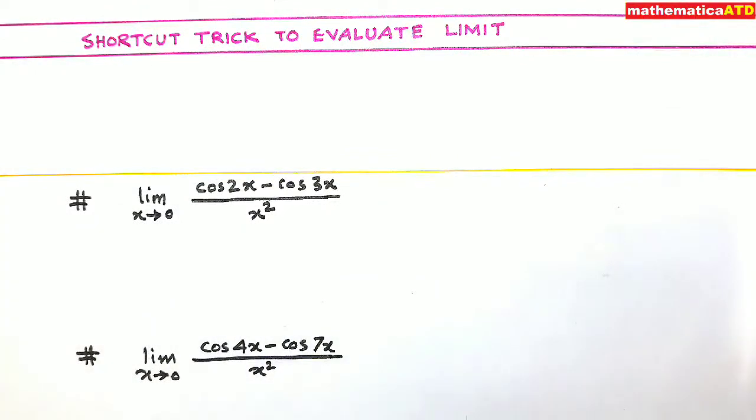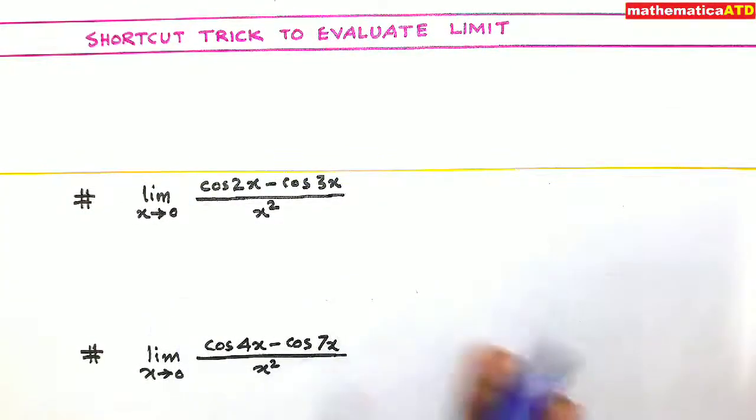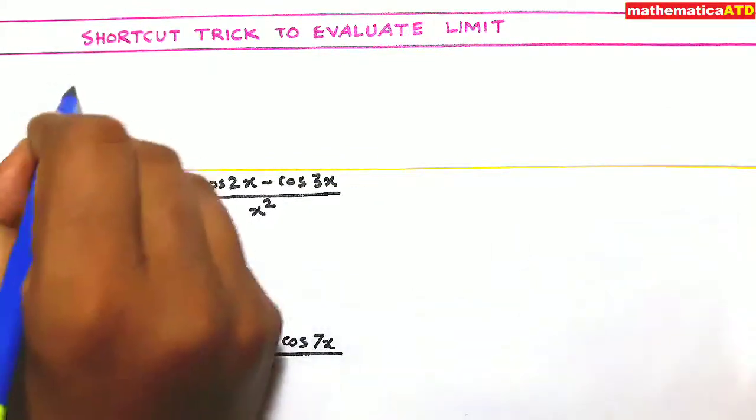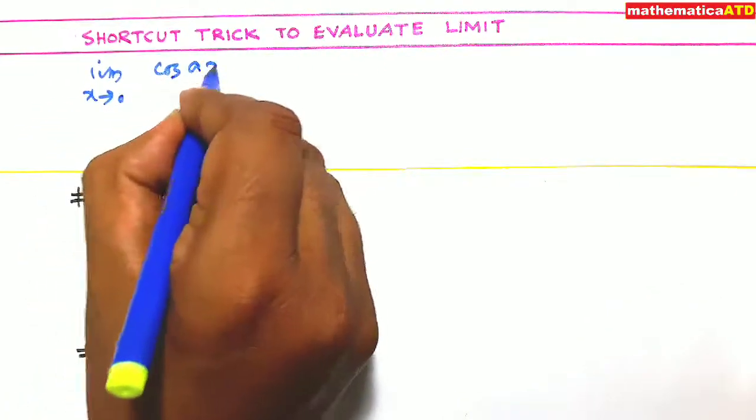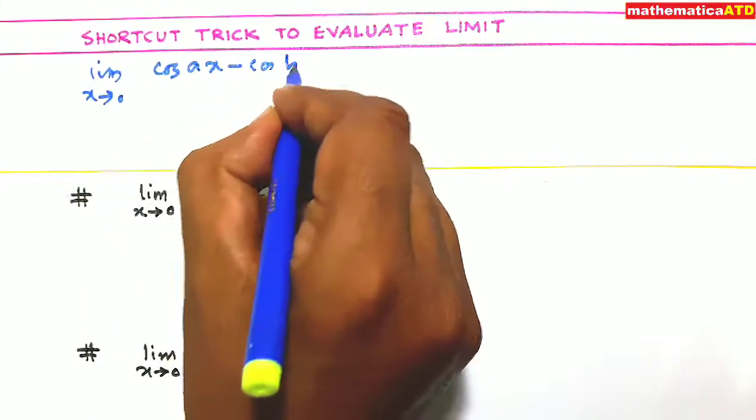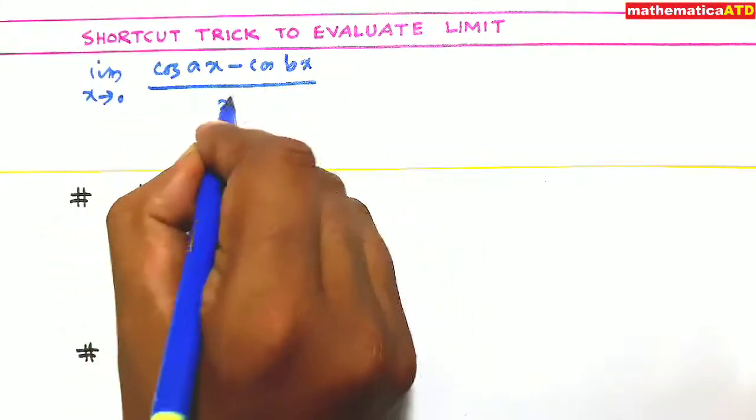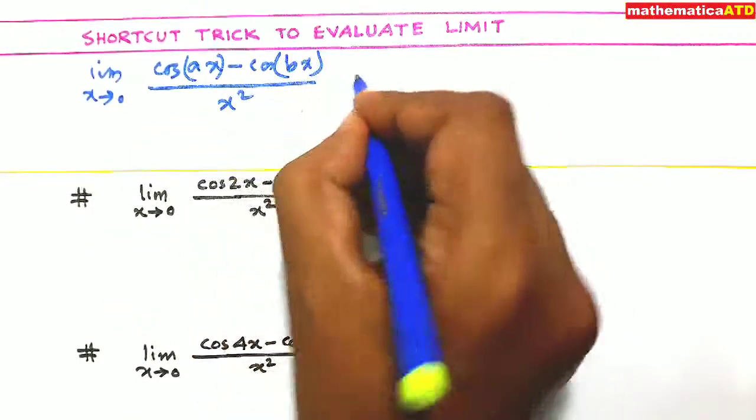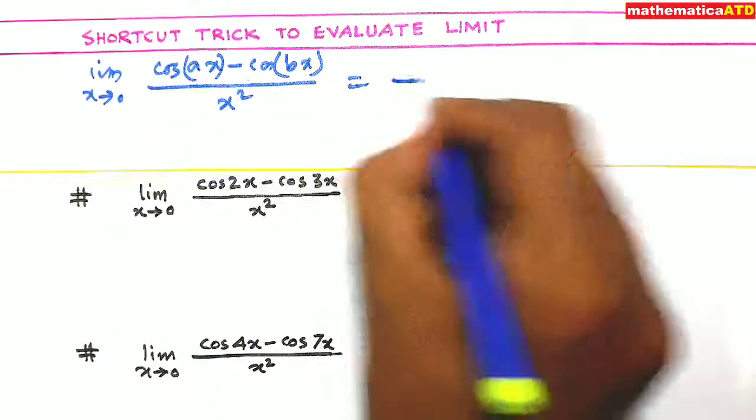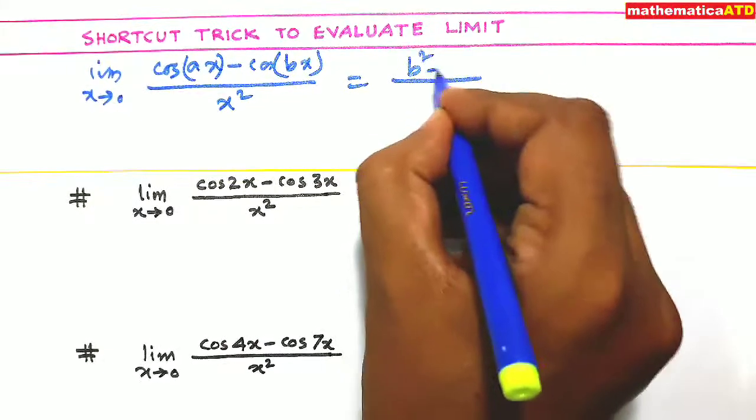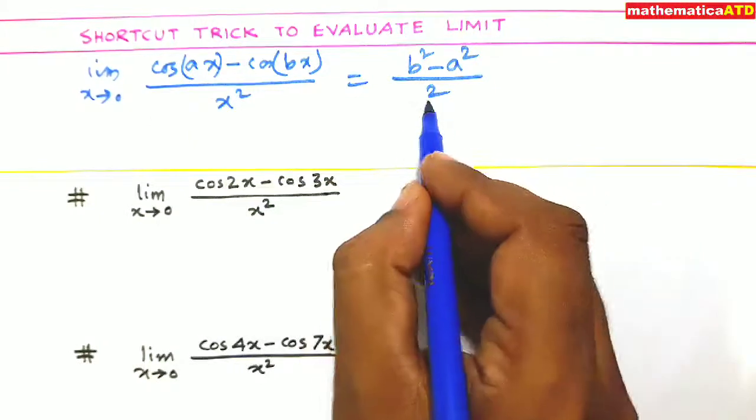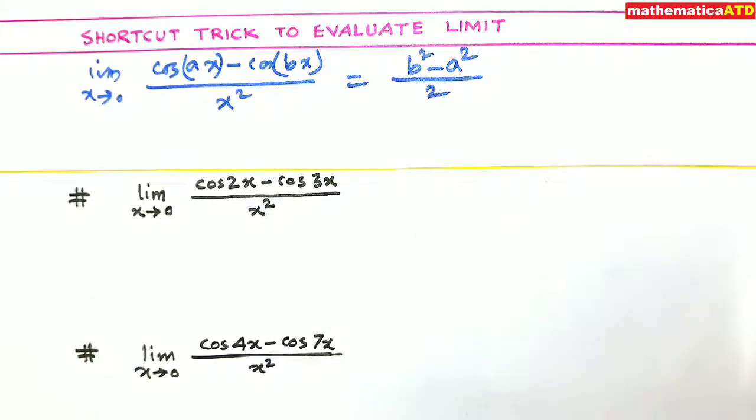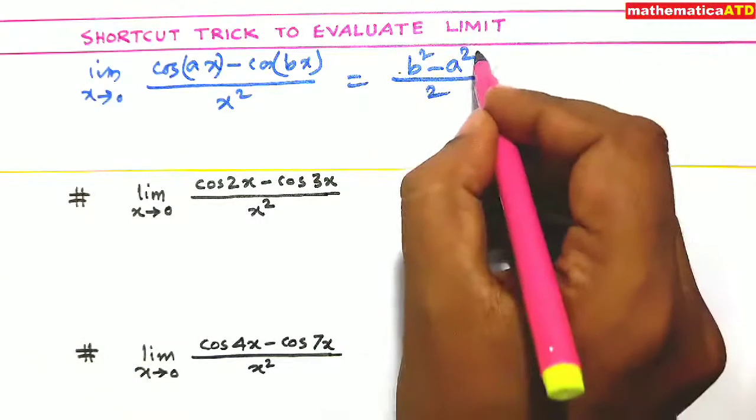First of all, I write the trick. If it is being given that limit x tends to 0, cos of ax minus cos of bx upon x square, this type of limit, then you can use my trick. The result is b square minus a square upon 2. So use this trick, you will get the result only in 3 to 5 seconds.